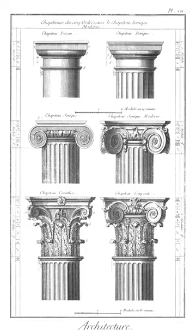Light: the openings in a window between mullions and muntins through which light enters an interior space. A six-over-six window is a window that has six lights in the upper sash and six in the lower sash.